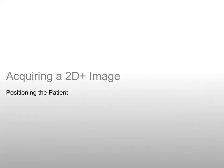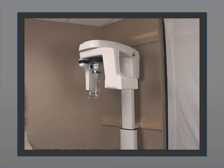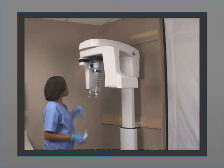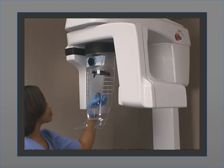Acquiring a 2D Plus image — Positioning the patient. The second step in acquiring an image with the CS8100 is to position the patient. Prepare the unit and patient, then use the optimized face-to-face positioning system. First, position the panoramic chin rest and make sure it clicks into place firmly. Fit the bite block to the panoramic chin rest, cover it with a plastic hygienic barrier, and ensure that the bite block is completely covered with a hygienic barrier.